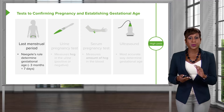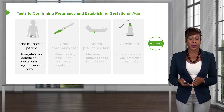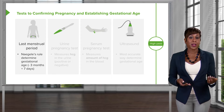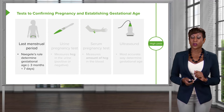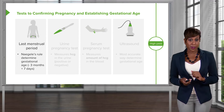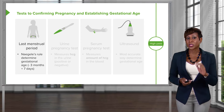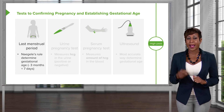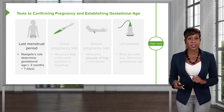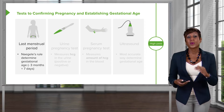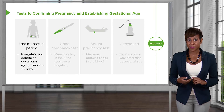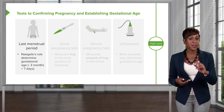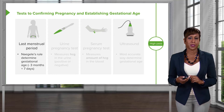We use something called Nagele's rule. What we do is take the last menstrual period, subtract three months, and add seven days. So if a patient tells us her last menstrual period is April 1st, we subtract three months giving us January, add seven days giving us the 8th, and her due date is January 8th. Again, this is based on an accurate last menstrual period.